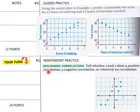And to our guided practice here. I'm going to use these scatter plots here. Predict the reasonable test score for four and a half hours of study and four and a half hours of TV watched. So and then students, this is you. Whether this is positive, negative, or relatively no correlation.